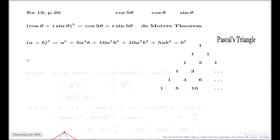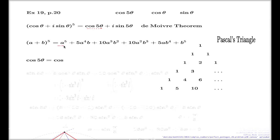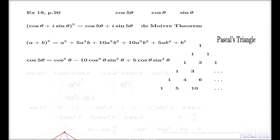Here's the expansion. So cos(5θ) from here: I take this term which is cos^5(θ), then this term — we have a negative because i² gives me negative 1 — and then this term, because i^4 gives me 1 again. That's it, we just solved the question. The expression for cos(5θ) in terms of cos(θ) and sin(θ) is here.